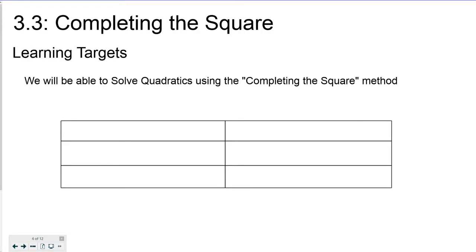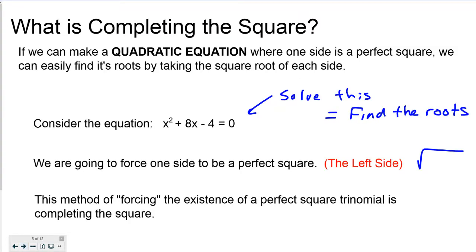Alright, so completing the square — we're going to be able to solve quadratics using the completing the square method. So what is completing the square? If we can make a quadratic equation where one side is a perfect square, we can easily find the roots by taking the square root of each side. Let's take a look at this equation: x squared plus 8x minus 4. So we're going to solve this — that's finding the roots.